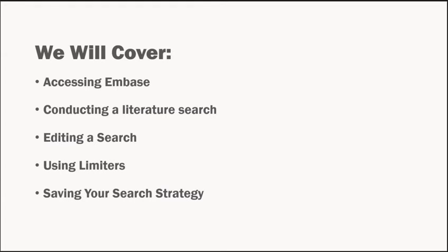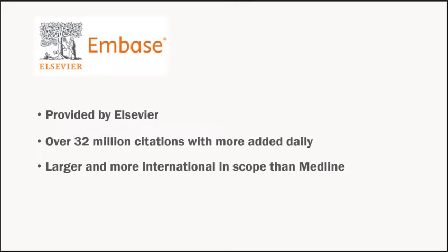Embase is a biomedical and pharmacological database provided by the publishing company Elsevier that contains over 32 million citations to journal articles and is updated daily. Compared to Medline, Embase's collection is larger and its coverage is more international in scope. For those reasons, it is often included in comprehensive literature searches.